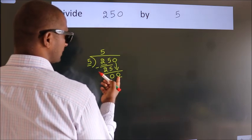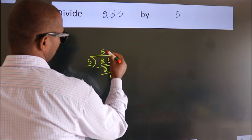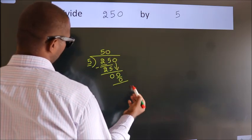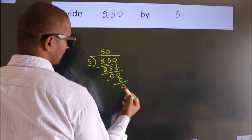When do we get 0? In 5 table. 5 times 0, 0. Now we subtract. We get 0.